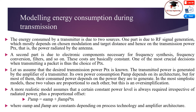Assuming the desired transmission power is known, the transmitted power is generated by the amplifier of the transmitter. Its power consumption depends on its architecture, but for most amplifiers, the consumed power depends on the power they are to generate. In the most simplistic model these two values are proportional, but a more realistic model assumes a certain constant power level is always required irrespective of radiated power, giving a proportional offset. That is, the power from the amplifier equals alpha_amp plus beta_amp multiplied by the transmitted power, where alpha_amp and beta_amp are constants depending on process technology and amplifier architecture.